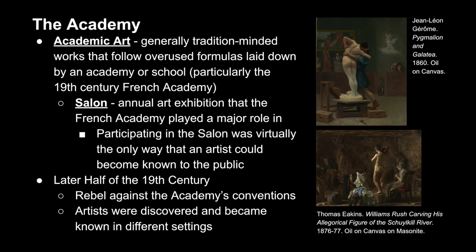Later in the 19th century, artists were rebelling against the Academy, its conventions, and its power in the art world. As a result of this shift, artists were discovered and became known in different settings. The images here are great examples: the top painting exemplifies the Academy's concerns — the artist is a scholar reflecting on the sculpture process through mythology. Yet in the bottom painting, the artist is way back in the corner in the dark and the model is in the foreground, showing more the real labor of sculpting rather than romanticizing the process.